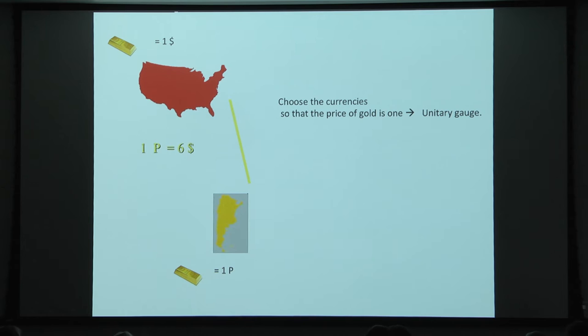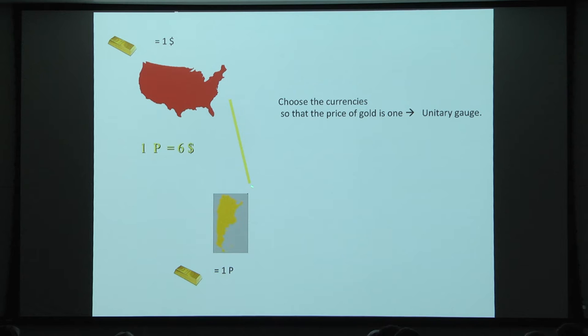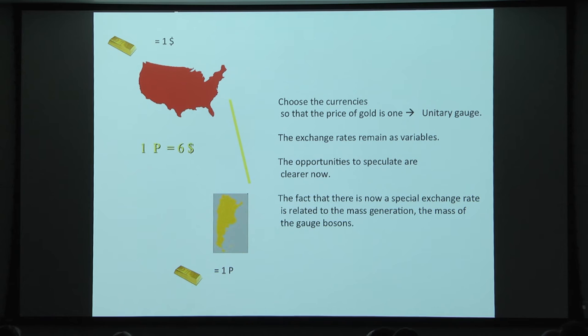There is an analog of unitary gauge, which is to set all the currencies so that the price of gold is one in all countries. In that case the exchange rates remain as a variable. This is different from the gold standard, where you fix all exchange rates to one. Here exchange rates continue to be present, but the opportunity to speculate is clearer — whenever an exchange rate is not one-to-one, there's an opportunity to speculate. The fact that there is now a special one-to-one exchange rate is related to mass generation, or the mass of the gauge bosons.